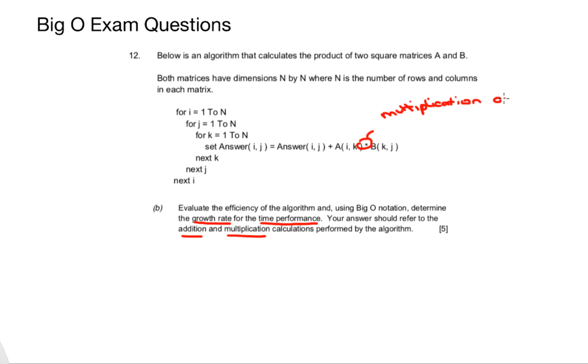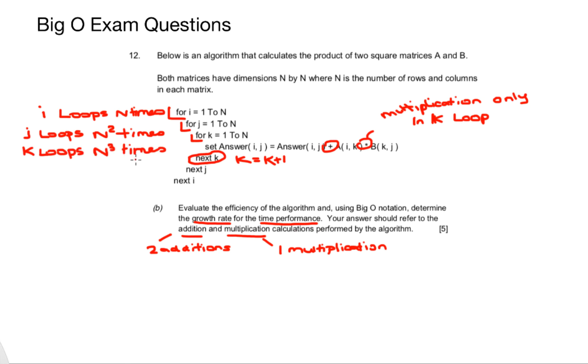All I'm doing here is I'm pulling out the multiplication and I've noticed from my previous question that multiplication only occurs inside the K loop. I have an addition inside the K loop and also next K is an incrementation and that means K equals K plus 1 is my increment there. So because I have a plus there and a plus where I add my answer to A and B, that gives me two additions and one multiplication. I know that my I loop will loop N number of times, my J loop will loop N squared number of times because it's nested inside the I loop, and my K loop as discussed in the previous question will also loop N cubed times.